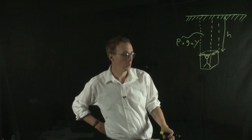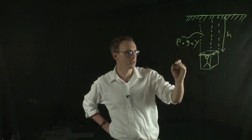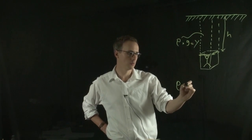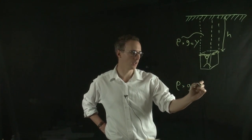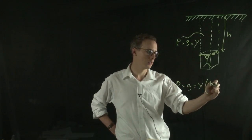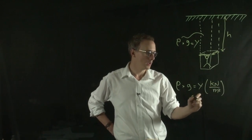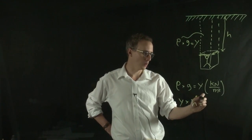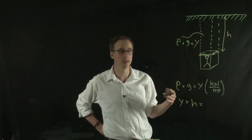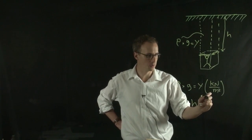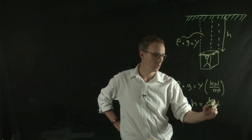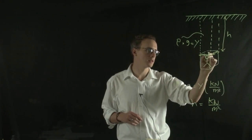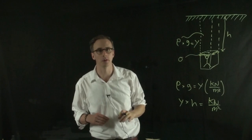If I have units of density and multiply that by acceleration due to gravity, I get my unit weight, which has units of kilonewtons per meter cubed. Then if I multiply the unit weight by the height H, that gives kilonewtons per meter cubed multiplied by meters — which cancels one meter on the bottom — leaving kilonewtons per meter squared, which is the stress unit. This is the stress at that point in the soil profile.